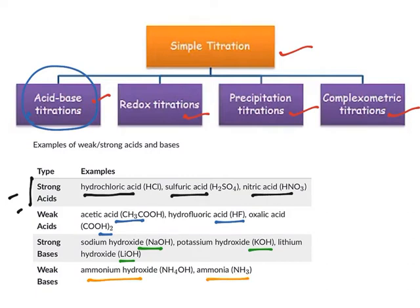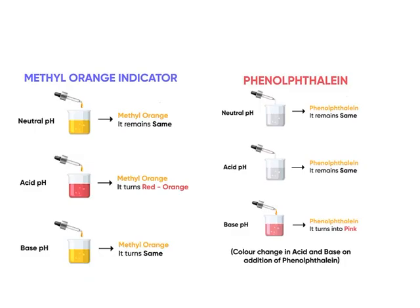All four categories — strong acids, weak acids, strong bases, and weak bases — can be taken as either the titrant or the analyte. Our job is to find out the concentration of the analyte using a neutralization reaction. In acid-base titrations, the reaction progression and neutralization can be monitored by using pH changes, and pH changes can be indicated by indicators.